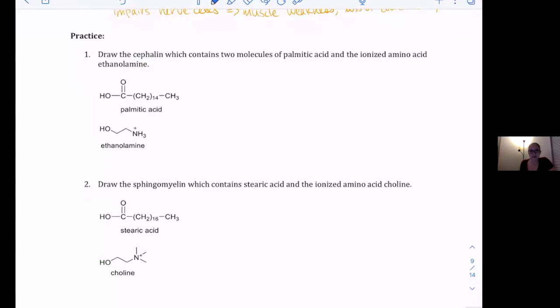The first problem says to draw the cephalin which contains two molecules of palmitic acid and the ionized amino acid ethanolamine. First we need to figure out what our backbone is. Our two choices really are the sphingosine or the glycerol. A cephalin is one of our two different types of glycerophospholipids, so because it's a glycerophospholipid we know that glycerol is going to be our base.